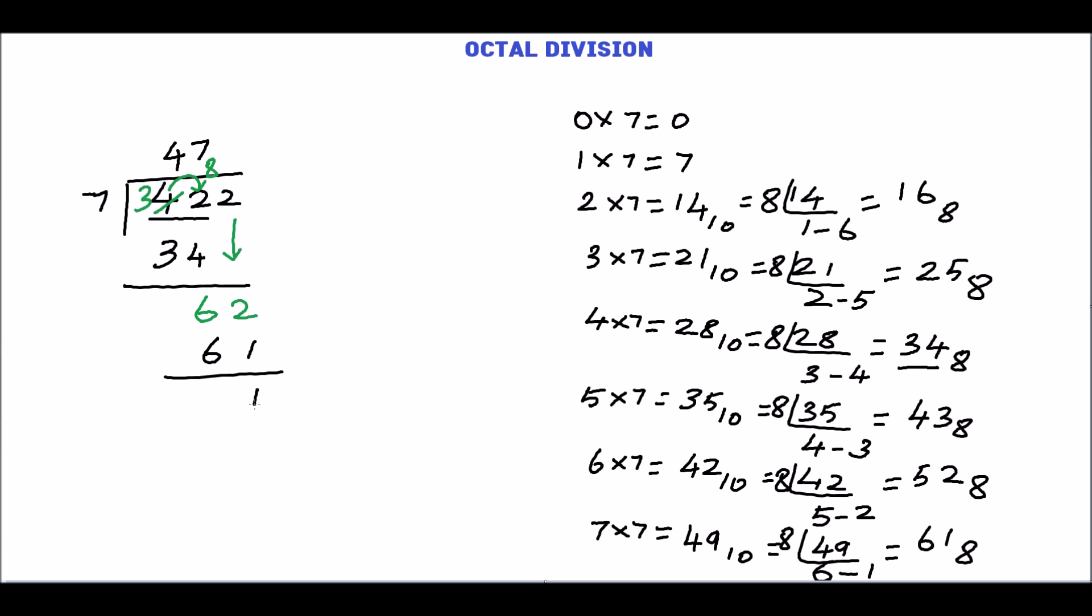2 minus 1, 1. 6 minus 6, 0. So the quotient is 47 and the remainder is 1.